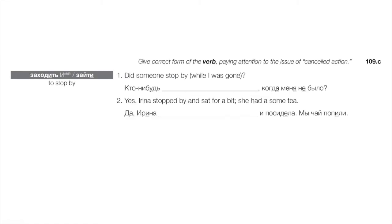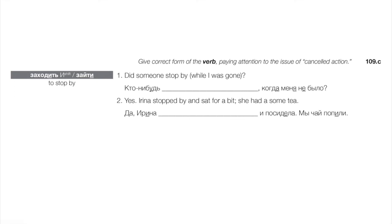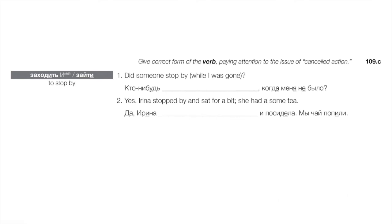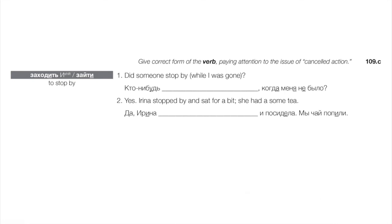The only time you would use a perfective verb for stopping by is if the stopping by is the first verb in a sequence — if you're telling a little narration: 'I stopped in the store and I bought this and I bought that' — then you would use perfective. For example: «я зашёл в магазин и купил хлеб.» Let's do two quick examples. 'Did someone stop by while I was gone?' — if they were there at all, they're gone now, so: «кто-нибудь заходил, когда меня не было?» Canceled action. 'Yeah, Irina stopped by and sat for a bit — she had some tea.' If we stop at just 'she stopped by,' that's «Ирина заходила» — canceled action. But if we say 'yeah, she dropped by and we had some tea and chatted for a bit' — that's the sequence: «Ирина зашла и посидела, и мы чай попили» — perfective sequence.